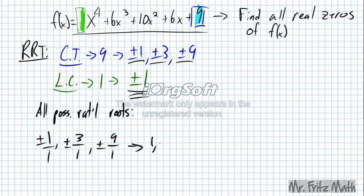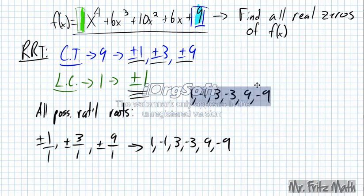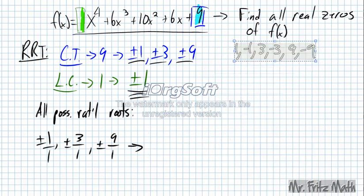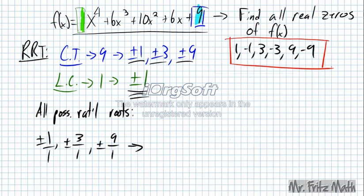So that's just going to give me 1, negative 1, 3, negative 3, 9, and negative 9. So here are my possibilities. I'm actually going to move this over here. So these are - I'm not finished yet. This is just my set of possible rational roots. So now what I need to do is test each one of these rational roots using synthetic division.